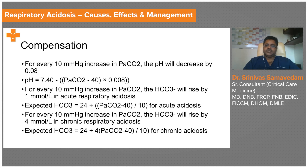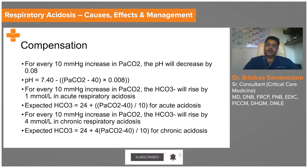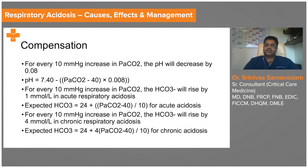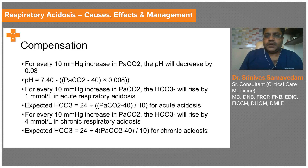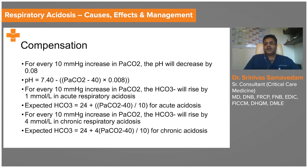For acute respiratory acidosis, for every 10 mmHg increase in CO2, the pH decreases by 0.08. As a compensation rule, bicarbonate rises by 1 mmol/L for every 10 mmHg increase in CO2 — the '1 for 10' rule. For example, with a CO2 of 60, the expected bicarbonate is 24 plus (60 minus 40)/10 × 1, giving an expected bicarb of 26.